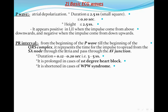The PR interval is calculated from the beginning of the P wave till the beginning of the QRS complex. It represents the time for the impulse to spread from the SA node through the atria and through the AV junction to the ventricles. Its duration is between 0.12 to 0.2 of a second, meaning 3 to 5 small squares in width, so it shouldn't exceed one big square. It is prolonged in first-degree heart block and shortened in WPW syndrome or pre-excitation syndromes.